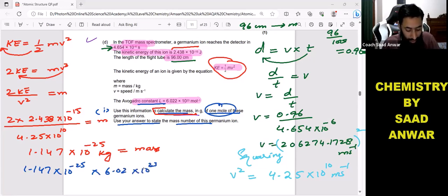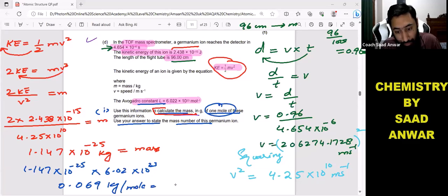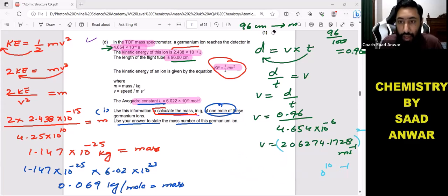When I multiply this with Avogadro's constant, you will see the answer would be 0.069 kilograms per mole. Now this is per mole. I am using my calculator. This is the answer to calculate the mass in grams per mole.